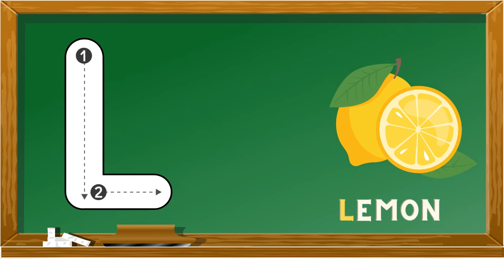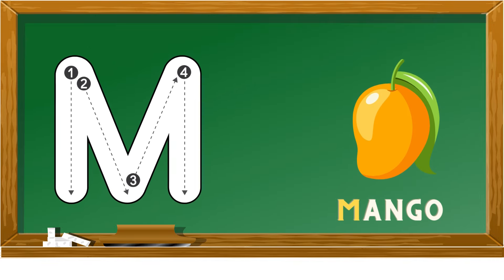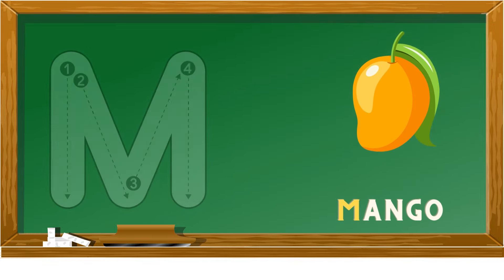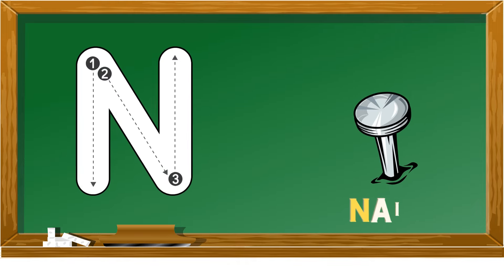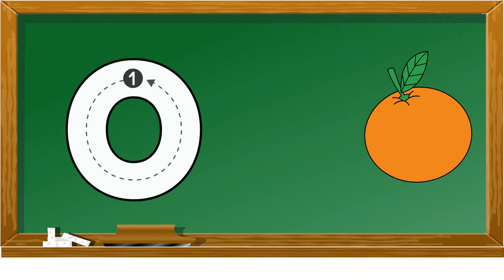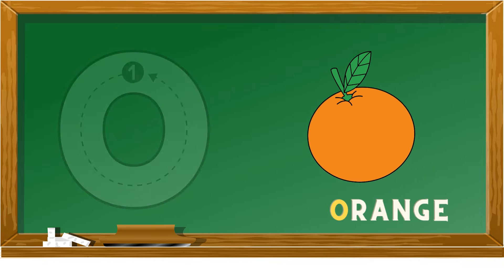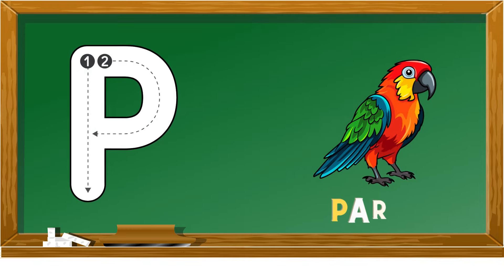M is for mango, N is for nail, O is for orange, P is for parrot.